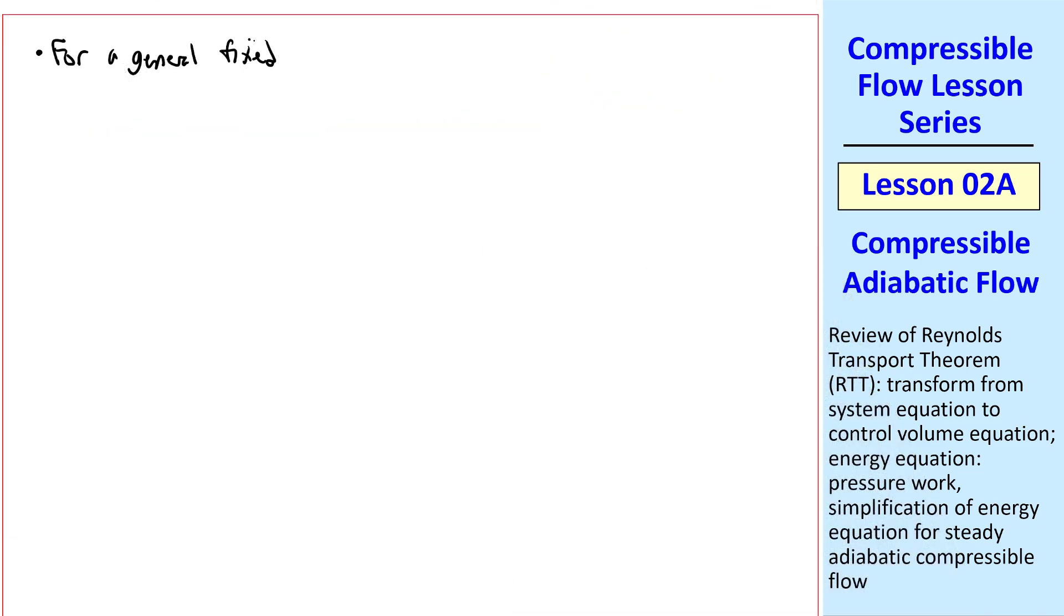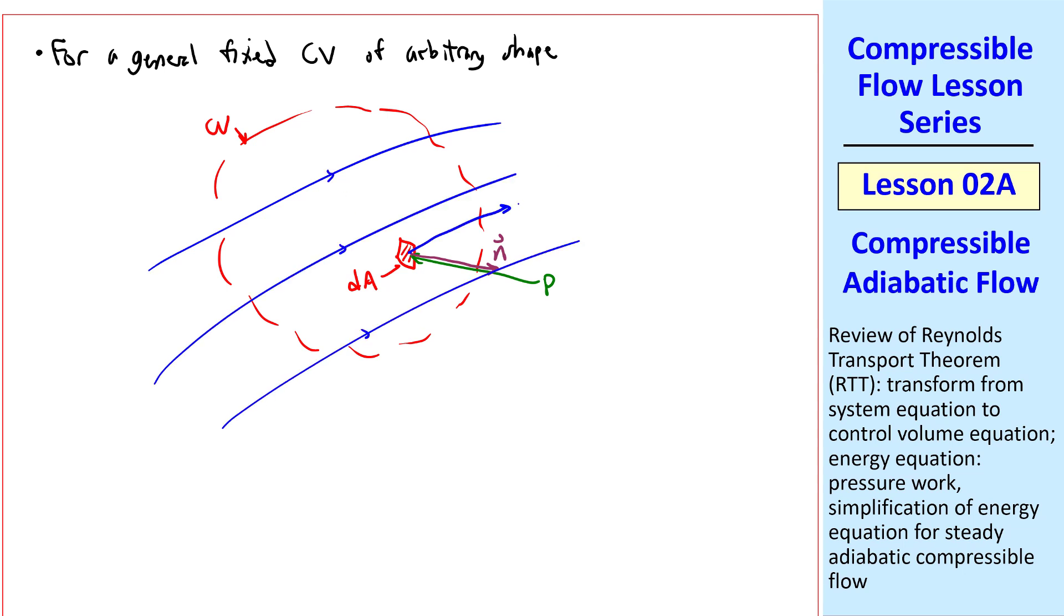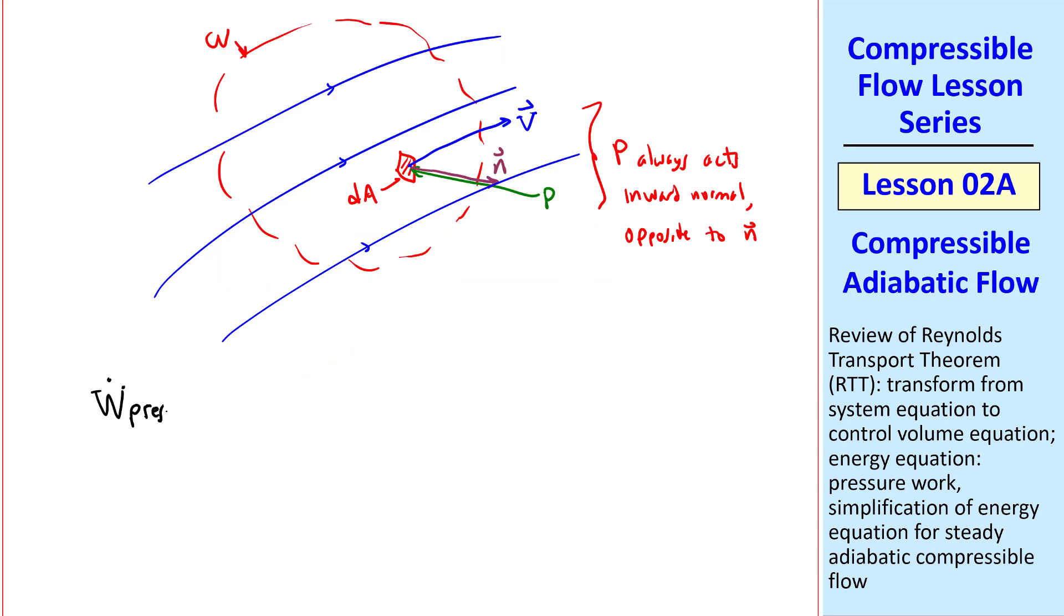Now let's look at this pressure work term for a general fixed control volume of arbitrary shape. Here's my control volume in my potato, with some little area element dA on the surface, pressure acting normal to the surface and inward, and the unit outward normal acting outward. Meanwhile, the streamlines look something like that, so V acts in some other direction. P always acts inward normal, which is opposite to the direction of N, the unit outward normal vector.